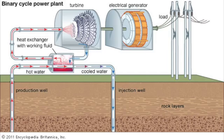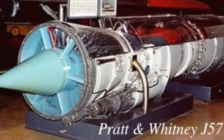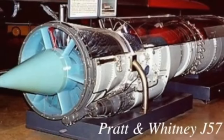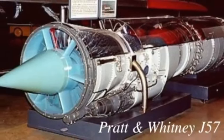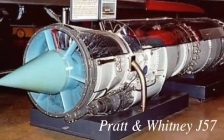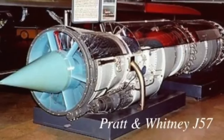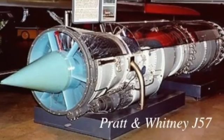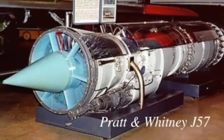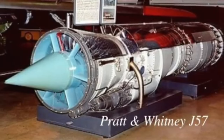Industrial gas turbines can create up to 50,000 shaft horsepower. Many of these engines are derived from older military turbojets such as the Pratt & Whitney J57 and J75 models. There is also a derivative of the Pratt & Whitney JT8D low-bypass turbofan that creates up to 35,000 horsepower.